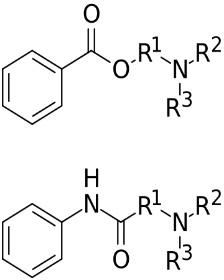Methemoglobinemia. Methemoglobinemia is a process where iron in hemoglobin is altered, reducing its oxygen-carrying capability, which produces cyanosis and symptoms of hypoxia. Exposure to aniline group chemicals such as benzocaine, lidocaine, and prilocaine can produce this effect, especially benzocaine. The systemic toxicity of prilocaine is comparatively low, but its metabolite, orthotoluidine, is known to cause methemoglobinemia.